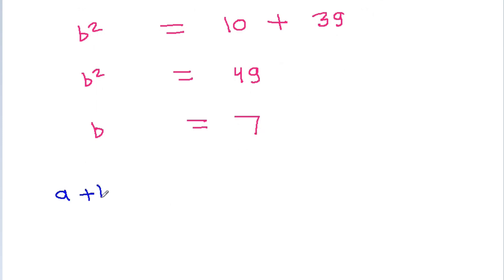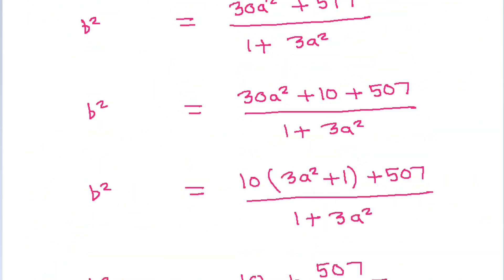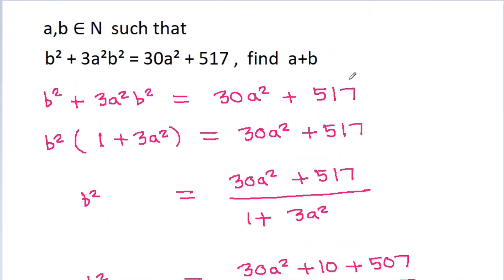So a plus b will be equal to 2 plus 7, that will be 9. The answer is 9.